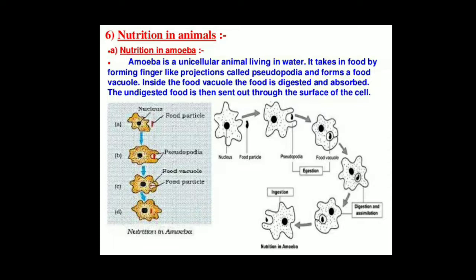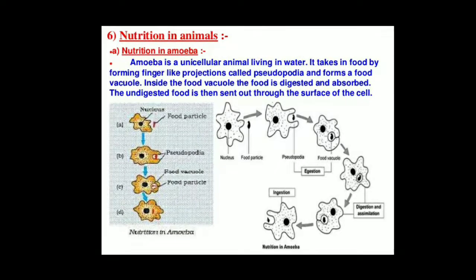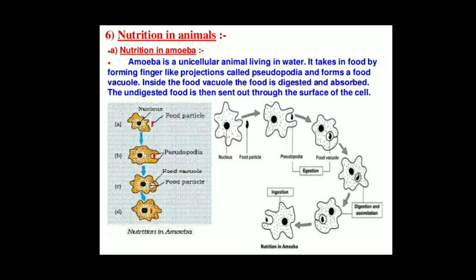When amoeba engulfs a food particle using its finger-like projection, the food particle enters into the vacuole, which we now call the food vacuole. Inside the food vacuole there are certain digestive enzymes. These enzymes help in the digestion of food, and after digestion the food is absorbed into the body. The undigested part of the food is then sent out through the cell membrane.